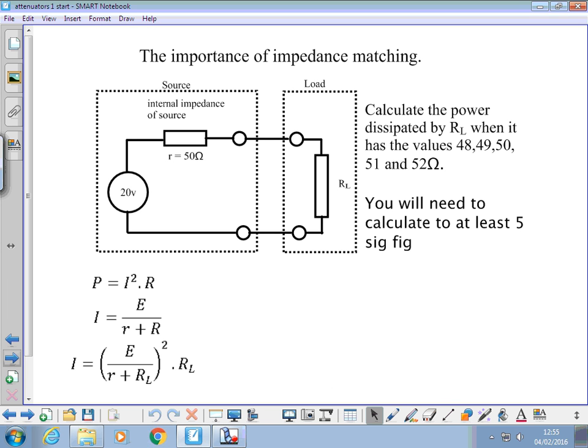A little bit of a look at the importance of impedance matching. I'm going to take five minutes with that circuit to calculate the power dissipated by the load resistor RL. What we've got here is a source. This source is providing us with 20 volts, and we're going to transfer as much power from that source to that resistor as possible. We need to calculate the power dissipated by RL where it has a value of 48, 49, 50, 51, and 52 ohms.